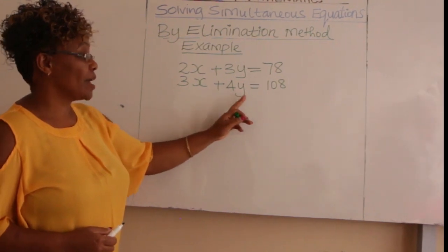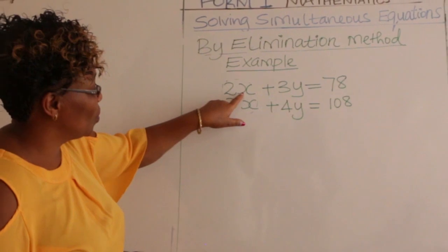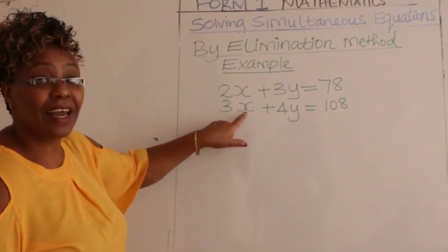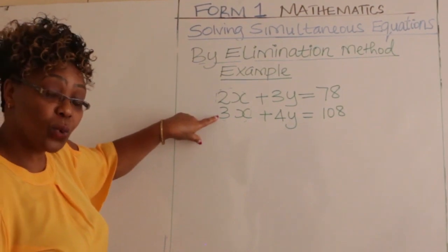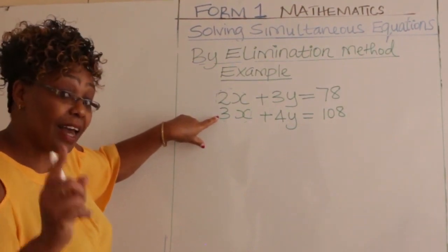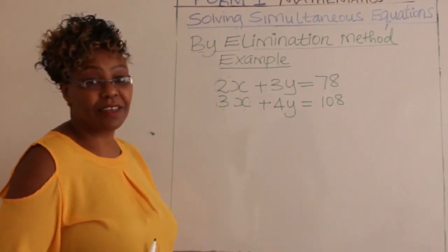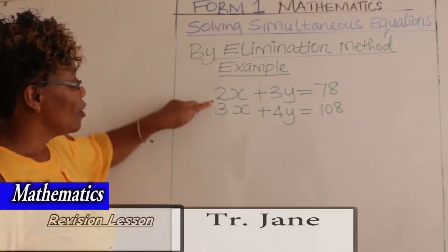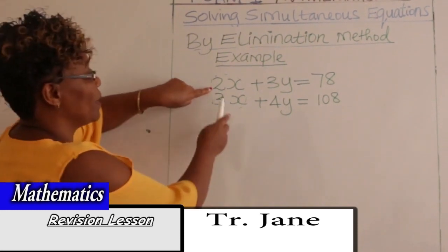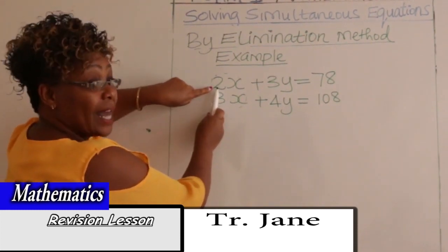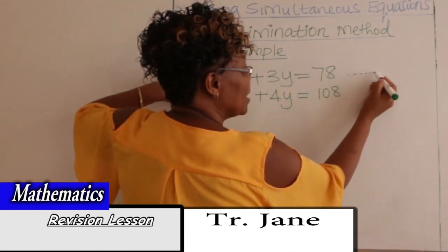The second equation is 3x plus 4y is equal to 108. To eliminate the x terms, we find the LCM of 2 and 3. The LCM of 2 and 3 is 6. To get 6 here, you will multiply the first equation by 3.